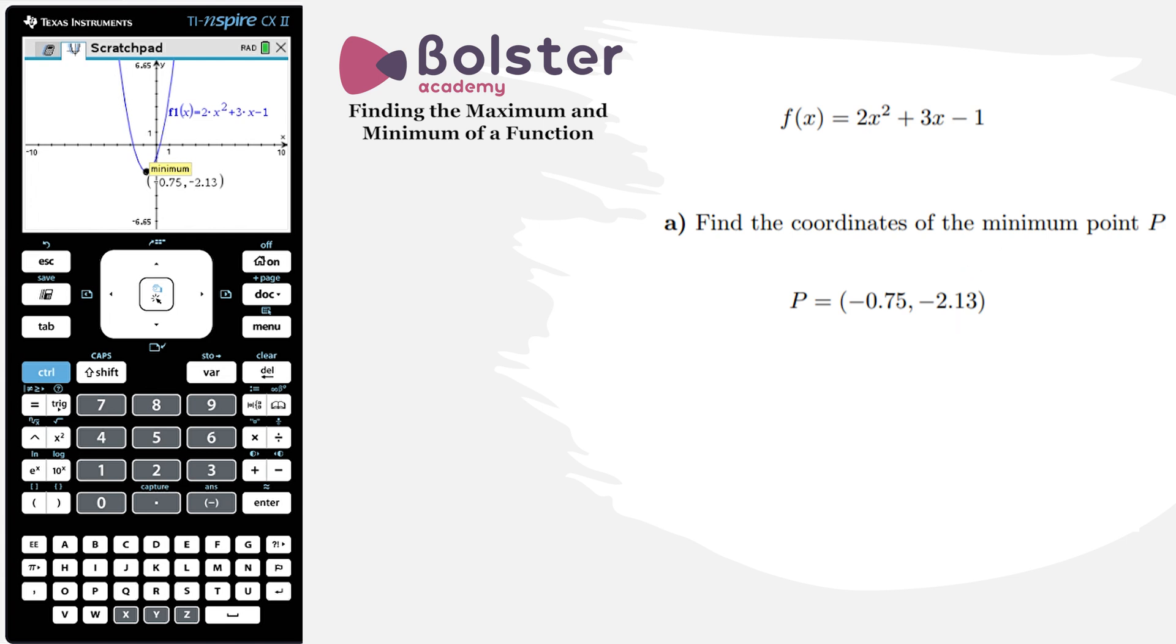So when we've been asked a question, we have to be careful and interpret what is the question asking for. Is it asking for the actual minimum value of the function? In this case, that would be minus 2.13. Or is it asking at what value does the minimum occur? If that's the case, it would be minus 0.75.